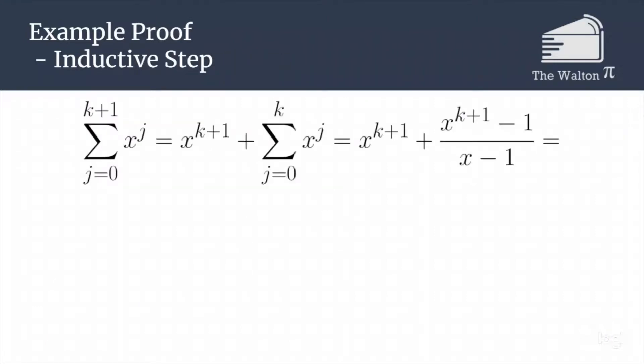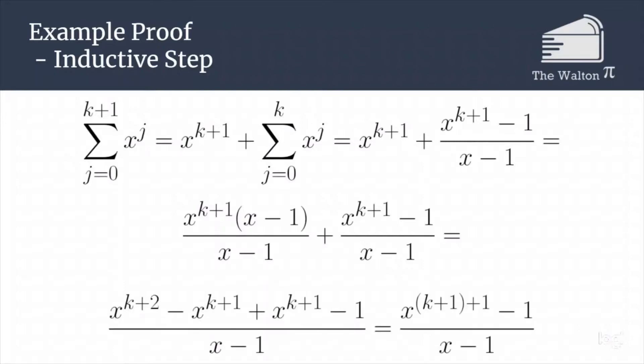We can then combine these two terms by getting a common denominator, so we multiply x to the k plus 1 by x minus 1 over x minus 1. We can then distribute the x to the k plus 1 through the x minus 1 term, and we will get x to the k plus 2 minus x to the k plus 1, which we can then combine. So x to the k plus 2 minus x to the k plus 1 plus x to the k plus 1 minus 1, all over x minus 1.